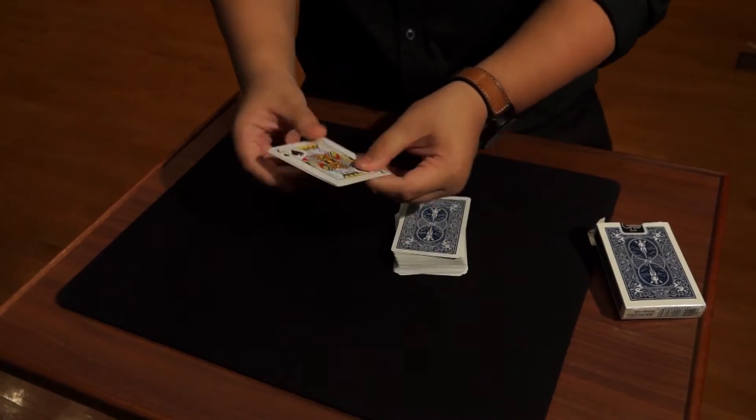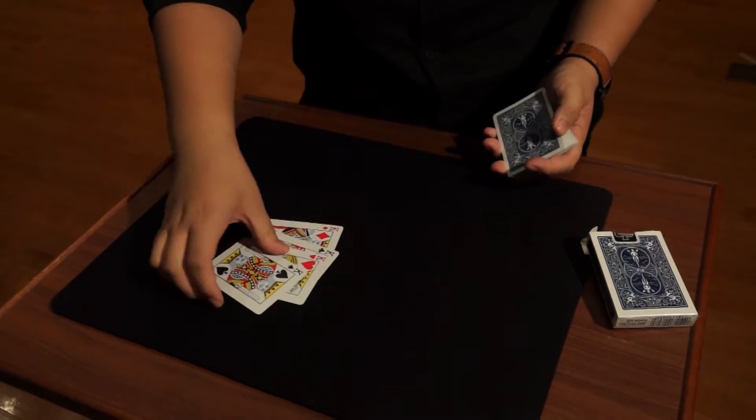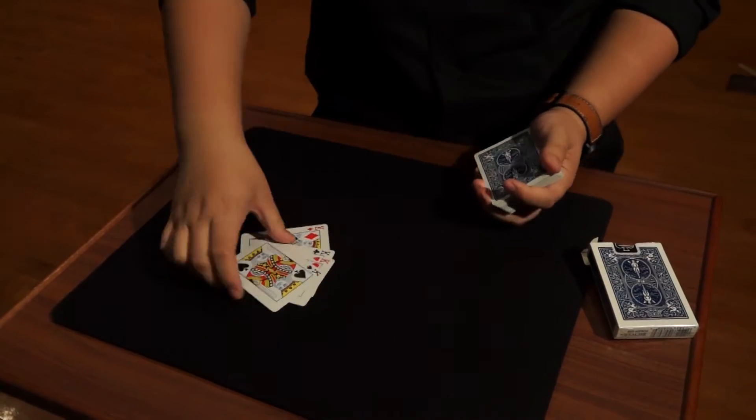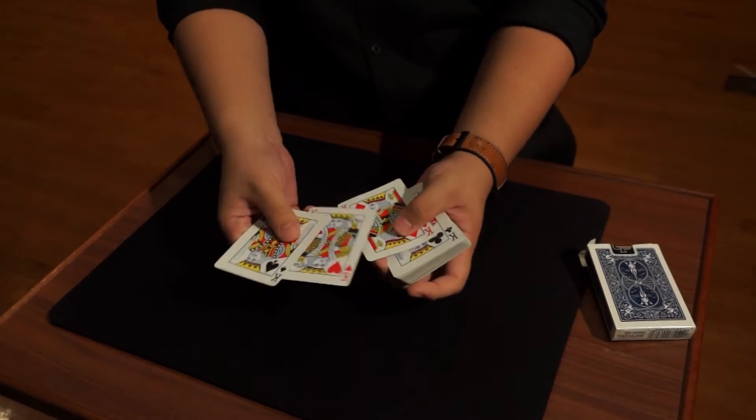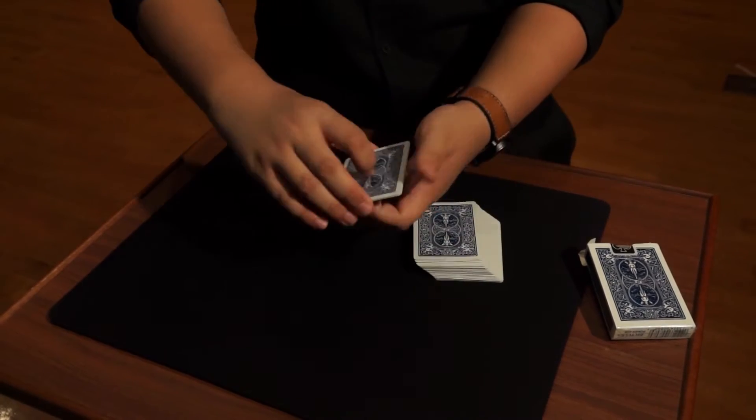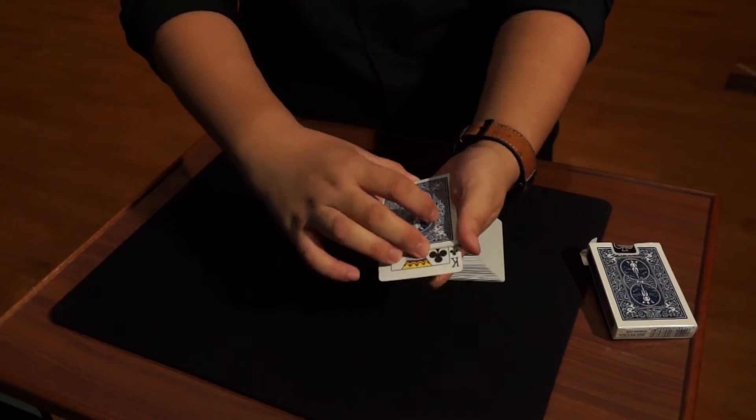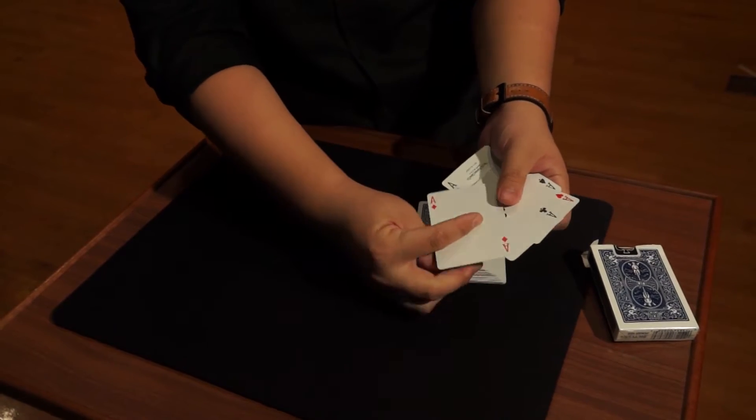Every single time I do this, people always ask me, can you change them into something even better? And I say, of course. I always ask them, what do you want? And they say, well, you have the kings. What's even better than kings are the 4 aces. So I perform the change where I wave over the kings and they change to 4 aces.